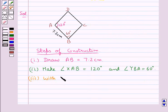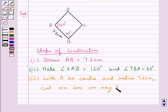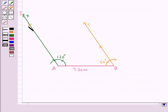So in the next step, with A as the center and radius 7.2 cm, cut an arc on ray XA. This arc is drawn with A as the center and radius 7.2 cm.